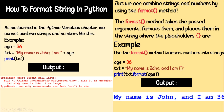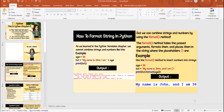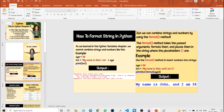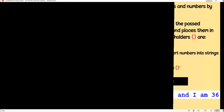When we say print txt.format, inside the bracket there will be 'age', then the output will be 'my name is John and I am 36'. So let me do this in the IDLE app.